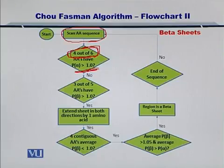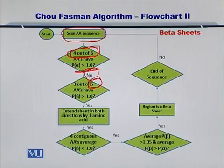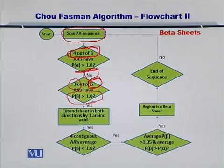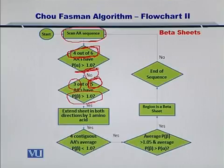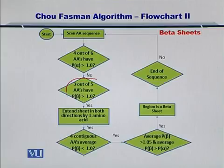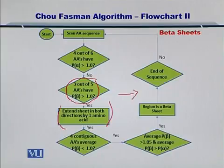If the amino acids were not going to form an alpha helix, then we took a set of 5 amino acids as shown here, and we evaluated if 3 out of these 5 had a propensity for making a beta sheet. Because beta sheets require more amino acids, we are considering 5 in this case. If 3 out of 5 amino acids had a propensity for forming a beta sheet, we extended the sheet in both directions — that is, in both the positive and the negative direction of the protein sequence.